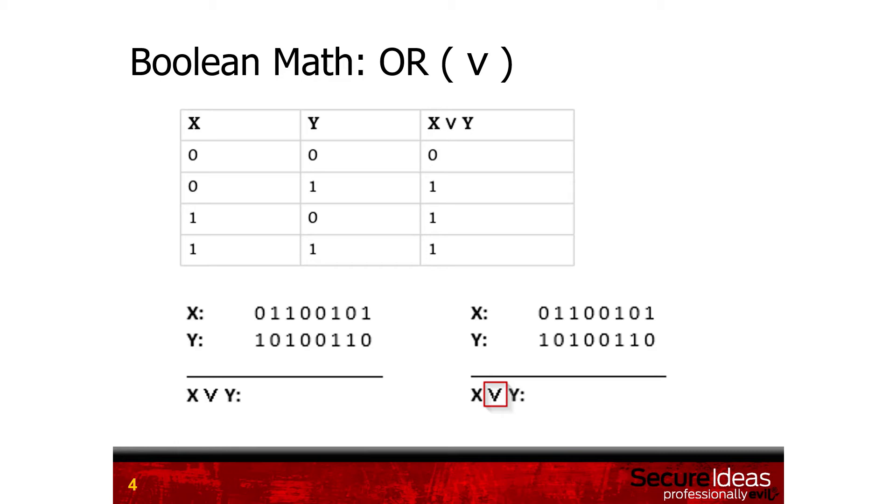The OR logic says is X or Y true? We take the first column and compare: X equals 0, Y equals 1. We use the OR logic to ask is either X or Y equal to 1? If it is, we give it a result of 1, and work our way down the list comparing the values between X and Y.